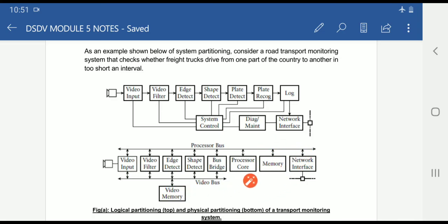Memories are used here to store the information. Network interface provides the internet facility to the system. This is about how logical partitioning is important before it is implemented in the physical partitioning.